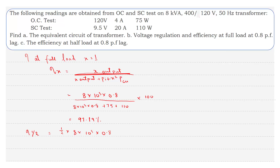Now we calculate the efficiency at half load, where x is taken as 1/2. Substituting all values in the efficiency equation, iron losses are 75 watts and copper losses are (1/2)-squared times 110 watts, multiplied by 100. Hence the efficiency at half load equals 96.8 percent.